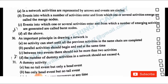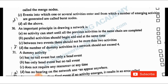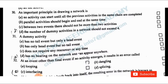An important principle in drawing a network: no activity can start until all the previous activities in the same chain are completed. Parallel activities should begin and end at the same time. Between two events there should not be more than two activities. Option A — no activity can start until all the previous activities in the same chain are completed — should be the answer.